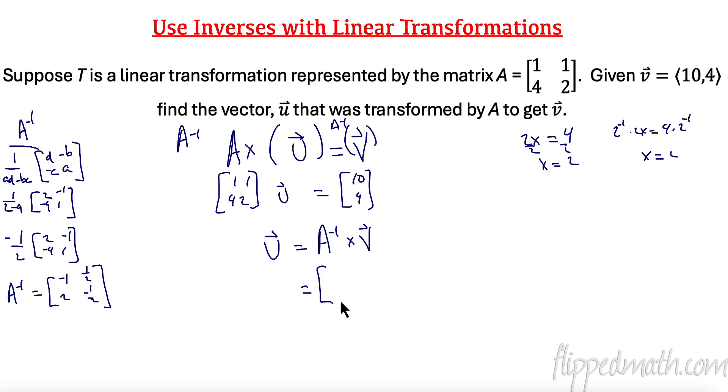So let's put that over here. Negative 1, 1 half, 2, negative 1 half. And now let's multiply that by our matrix, or excuse me, our vector V and see what we get.